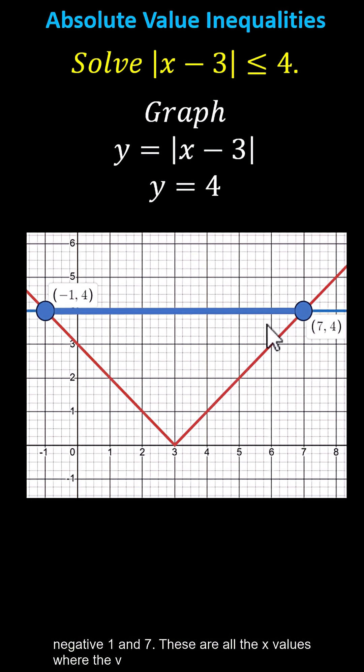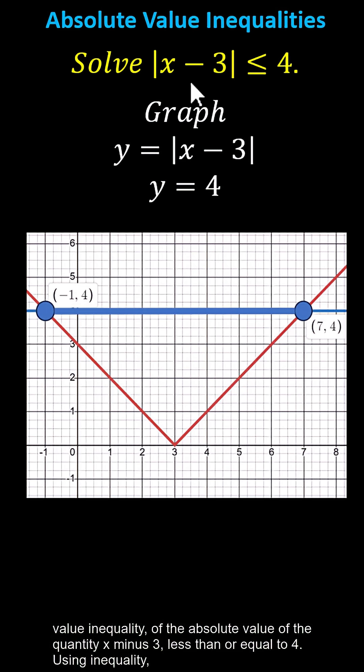These are all the x values where the v is below or on the horizontal line y equals 4, which are the x values that satisfy the absolute value inequality of the absolute value of the quantity x minus 3 less than or equal to 4.